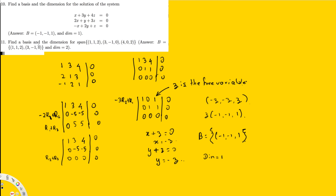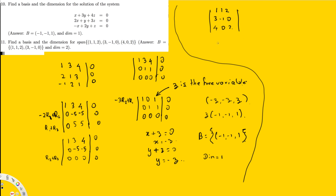The next question asks us to find the basis and dimension for the span of vectors: (1, 1, 2), (3, -1, 0), (4, 0, 2). This is not a null space problem since there's no zero on the right-hand side. We simply arrange the vectors as rows: 1 1 2 / 3 -1 0 / 4 0 2, then perform row reduction.